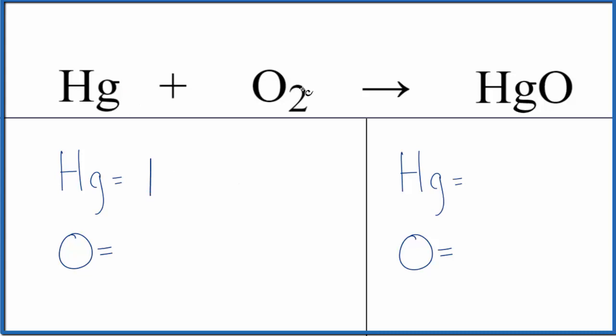We have one mercury and two oxygen atoms. Over here, we have one mercury and one oxygen atom.